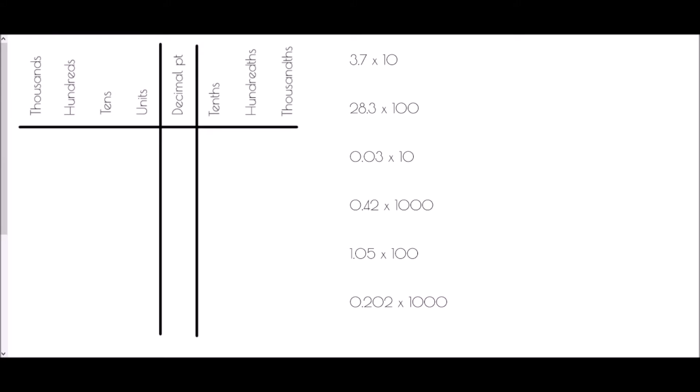We're going to begin by multiplying by 10, 100, or 1000. In each case we have to start thinking about the place value of each digit within that number. In my first example I have 3.7 times 10, so I have three units, a decimal point, and seven tenths. Because we are multiplying by 10, every digit is going to move one place to the left — the units will turn into tens, so the 3 becomes 3 tens.